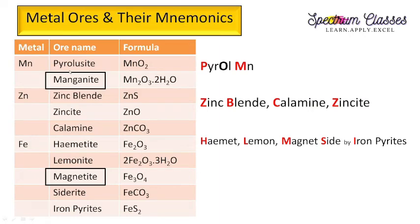The next metals are manganese, zinc, and iron. For manganese the mnemonic is 'spiron-mn' — at the start there is no Mn but at the end we have Mn, helping us memorize these are manganese ores. The ores are pyrolusite (MnO2) and manganite (Mn2O3·2H2O). For zinc: zinc blende (ZnS), calamine (ZnCO3), and zincite (ZnO) — you can relate these as GGC or remember all three.